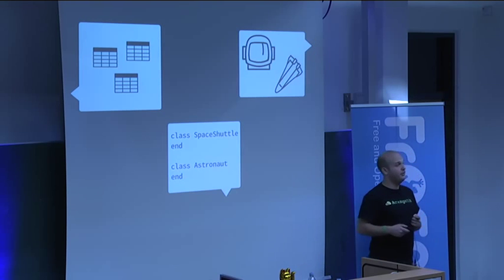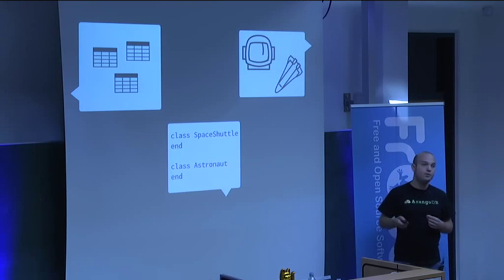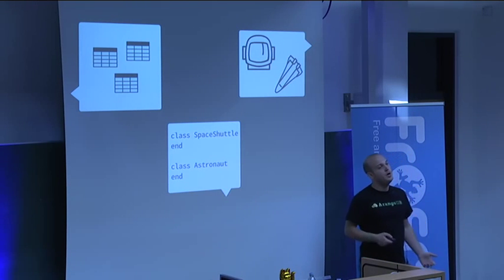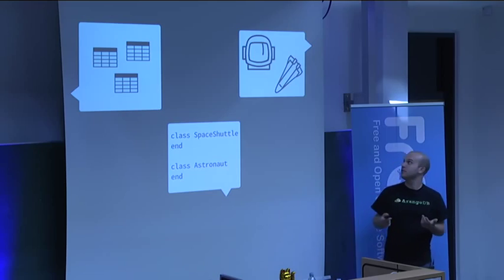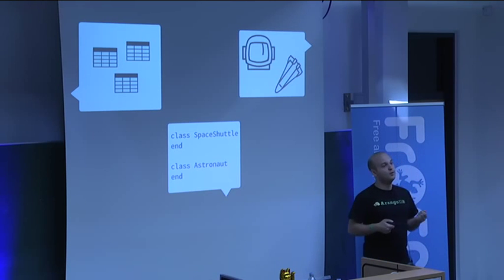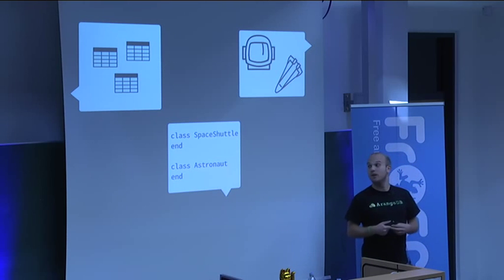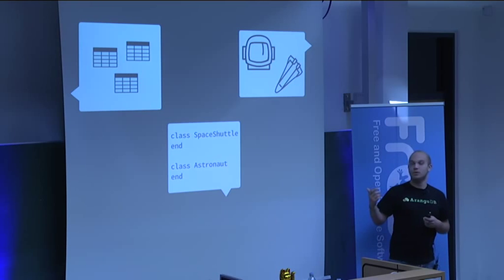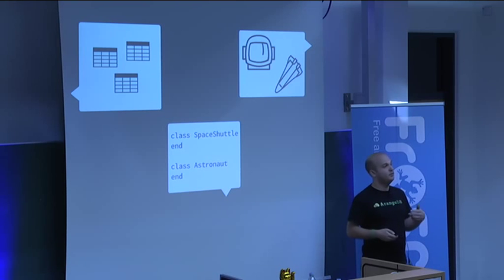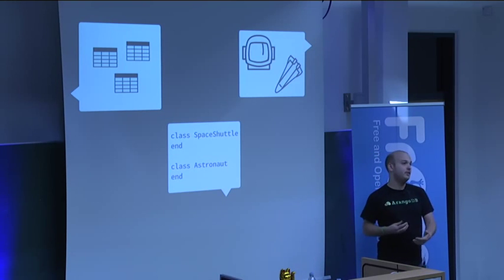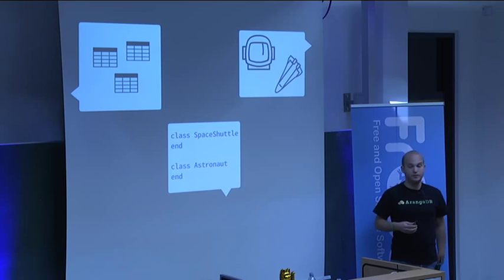This is an entirely different vocabulary than the one used by the person talking about tables. Then you have a third person talking about the problem at hand — the domain expert who wants to solve a problem. In our example, it's about astronauts and space shuttles. This person doesn't really understand what tables are, or what classes are, or what inheritance is. So they all speak a different language, and we are often in this situation.